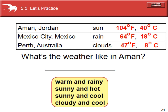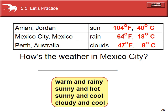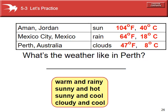Let's look at a chart showing weather in Amman, Jordan; Mexico City; and Perth. The first question: what's the weather like in Amman? It says sun, and the temperature is 104°F or 40°C — pretty hot. So we would say it's sunny and hot. How's the weather in Mexico City? It's got rain and it's 64°F or 18°C, so it's warm and rainy. What's the weather like in Perth? We have clouds, and it's 47°F or 8°C — so it's cloudy and cool.